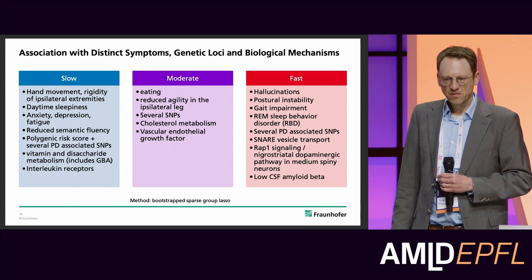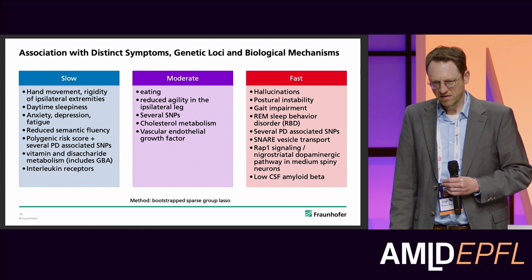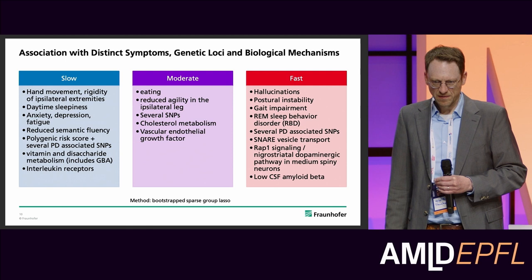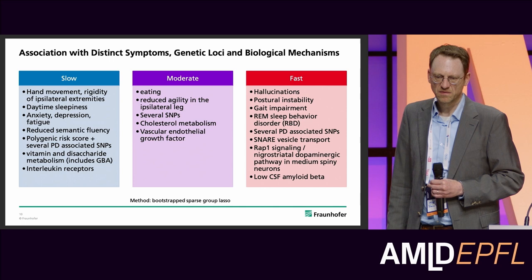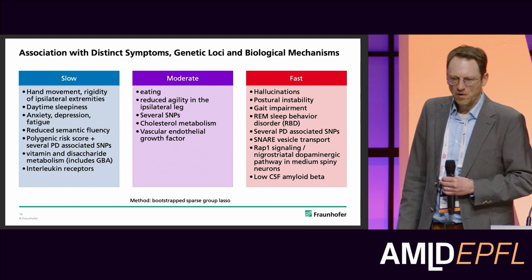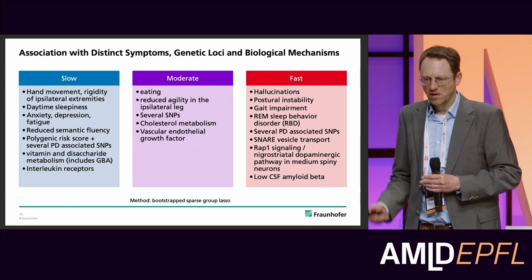In the slow-progressing group, we found that patients typically had difficulties with hand movements, rigidity of extremities, extended daytime sleepiness, anxiety, depression, fatigue, and reduced semantic fluency. We also found an association to a polygenic risk score developed in the literature for Parkinson's disease, as well as associations to several PD-associated SNPs. Moreover, we found an association to vitamin and disaccharide metabolism and to genetic variants in interleukin receptors.